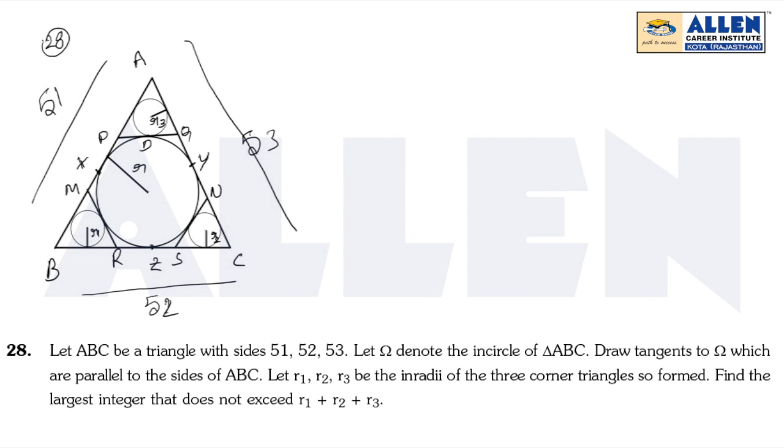Question number 28. I see this question, so again geometry question this one. Let ABC be a triangle with sides 51, 52, 53.